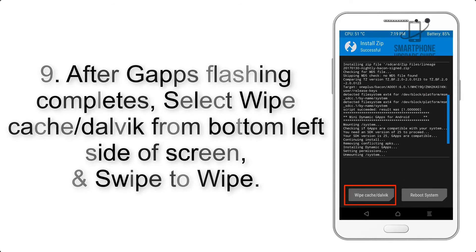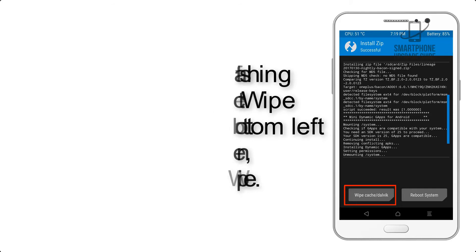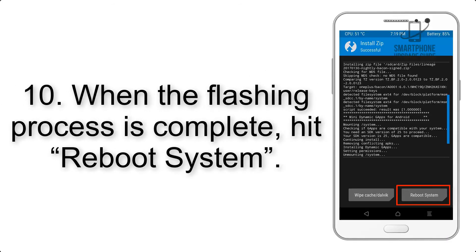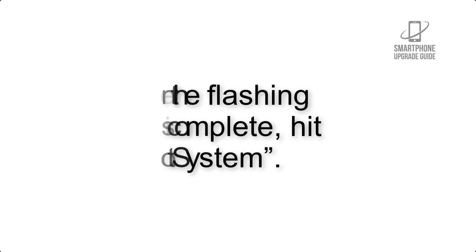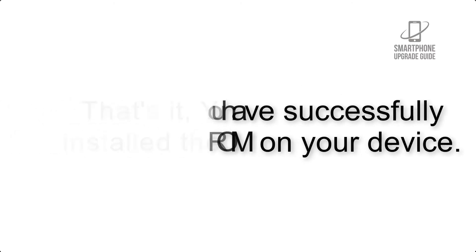Step 9: After GApps flashing completes, select Wipe Cache and Dalvik from the bottom left side of the screen and swipe to wipe. Step 10: When the flashing process is complete, hit Reboot System. That's it — you have successfully installed the ROM on your device.